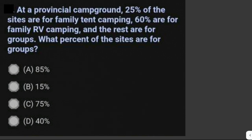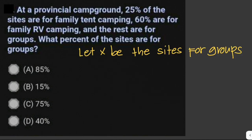The unknown here is the sites for groups, so we let X be the sites for groups. The total percentage of everything is equal to 100%. Therefore, the total of the sites for family tent camping, family RV camping, and for groups is equal to 100%.